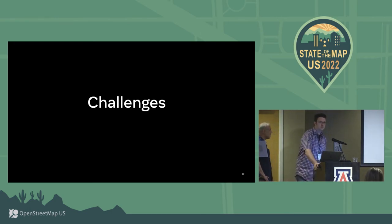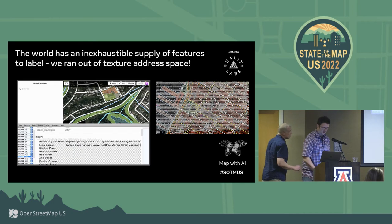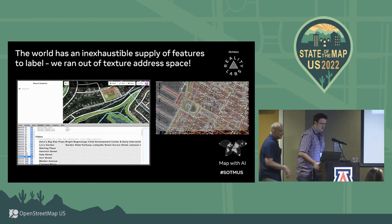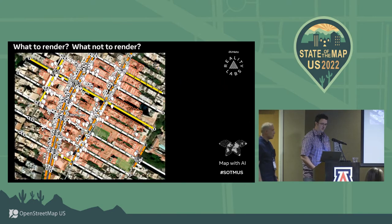One thing we ran into is that we have a lot of labels to render, and as you pan around the world there's just an inexhaustible supply of them. Eventually you overwhelm the GPU — it's trying to refer to too many textures. We've been experimenting trying to build a dynamic sprite sheet out of all the line labels as you pan around, to save memory address space. That's an unsolved problem as of yet.